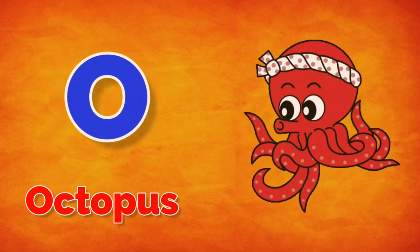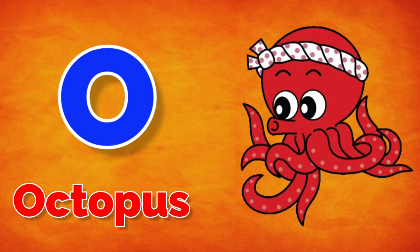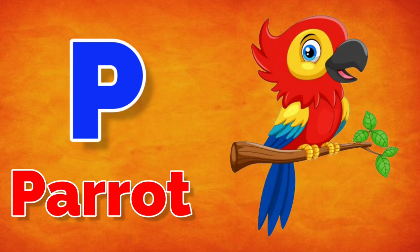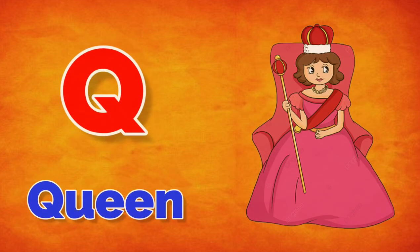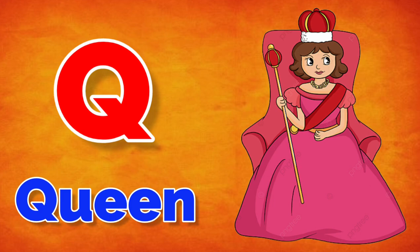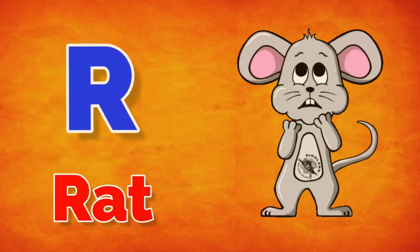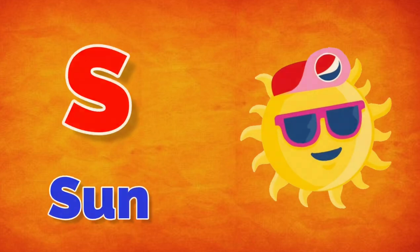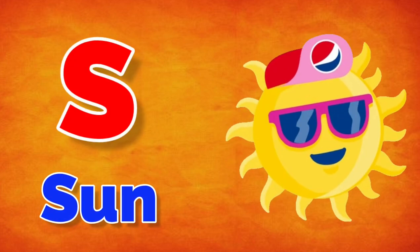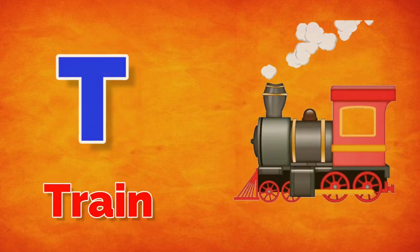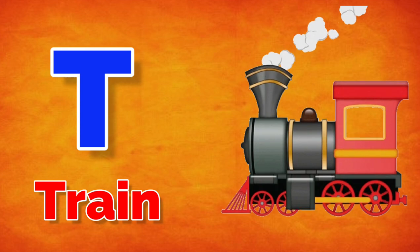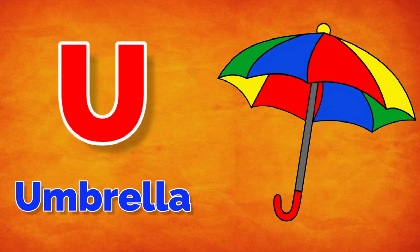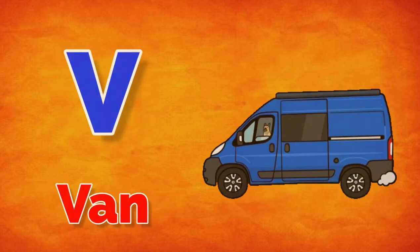O for octopus, B for parrot, U for queen, R for red, S for person, E for friend, U for umbrella, E for branch.